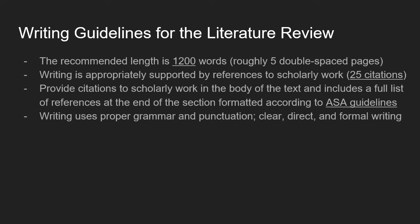Here are a few general writing guidelines for developing a literature review. A recommended length is around 1,200 words or five double-spaced pages. The writing should be appropriately supported by references to scholarly work — I recommend including at least 25 citations to academic journal articles and books within the body of your literature review. Provide citations in the body of the text and include a full list of references at the end, formatted according to ASA guidelines.